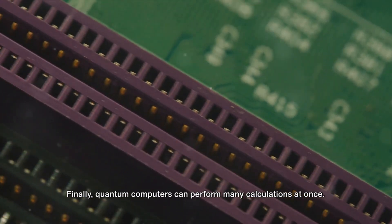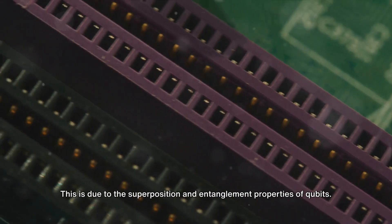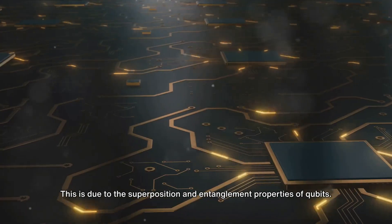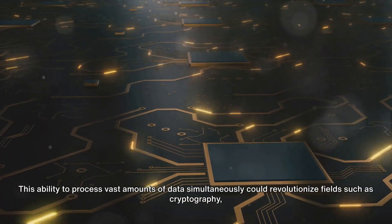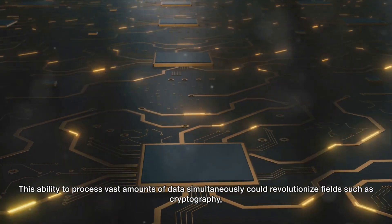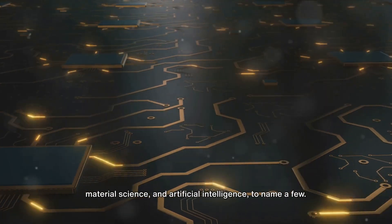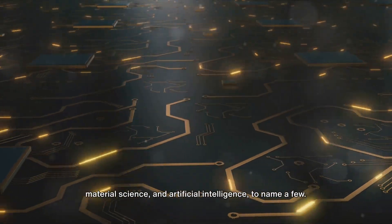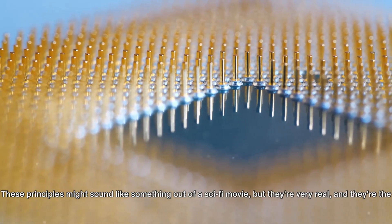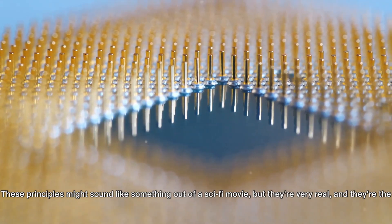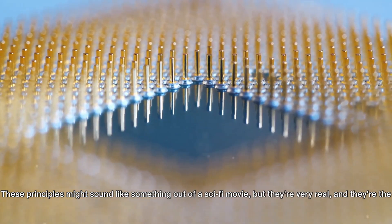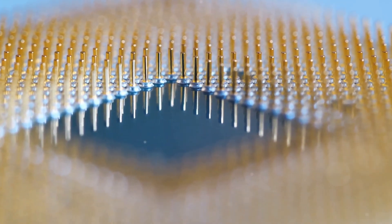Finally, quantum computers can perform many calculations at once. This is due to the superposition and entanglement properties of qubits. This ability to process vast amounts of data simultaneously could revolutionize fields such as cryptography, material science, and artificial intelligence, to name a few. These principles might sound like something out of a sci-fi movie, but they're very real, and they're the fundamentals of quantum computing.